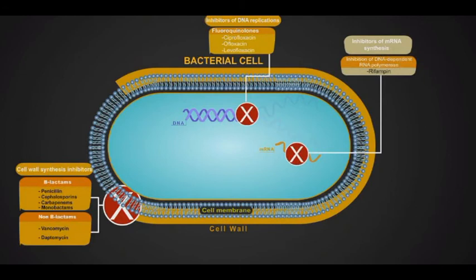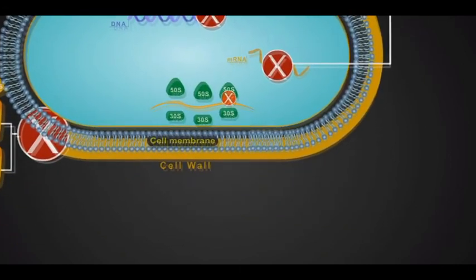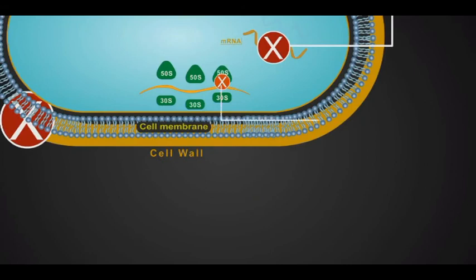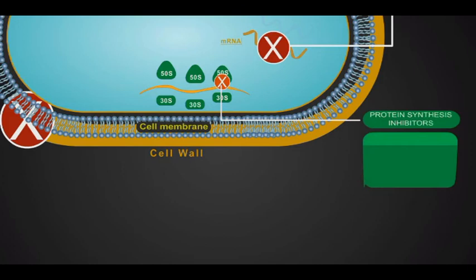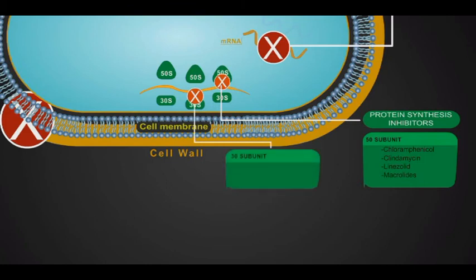One of the historical targets of antibacterial agents is ribosomal protein synthesis. They either target the 50S subunits such as chloramphenicol, clindamycin, linezolid, and macrolides, or the 30S subunits such as aminoglycoside and tetracycline.